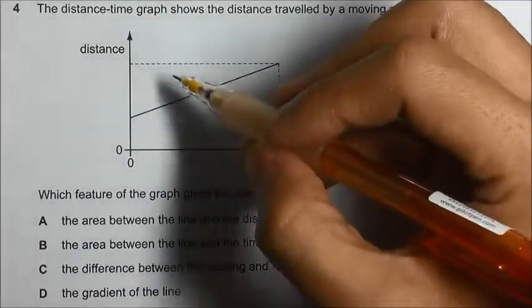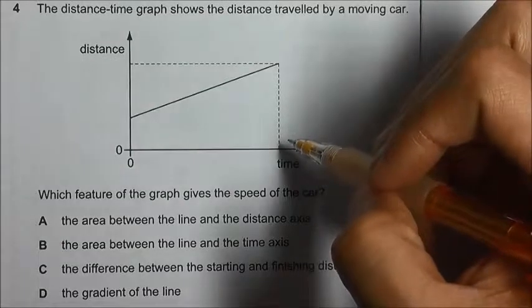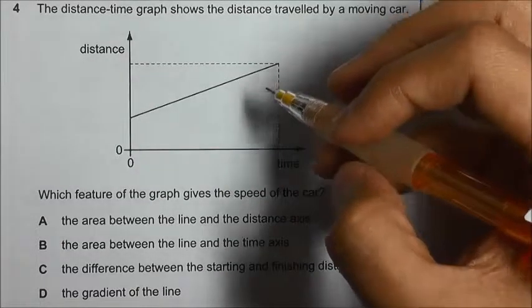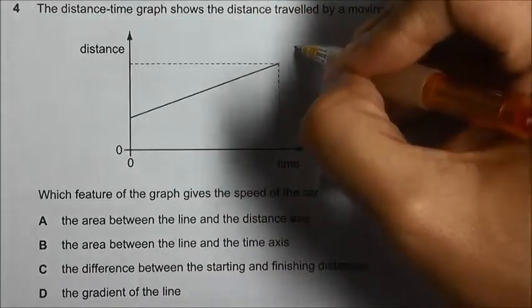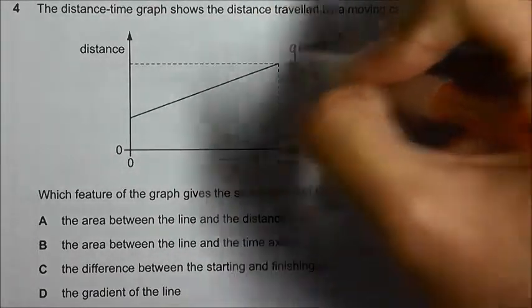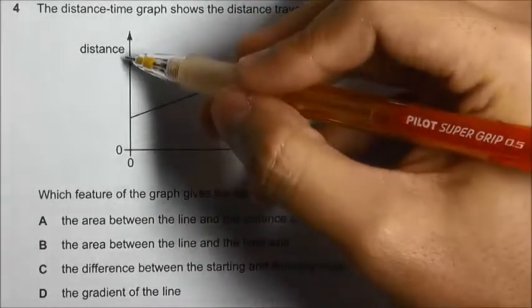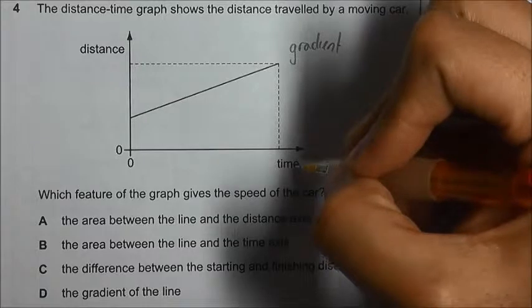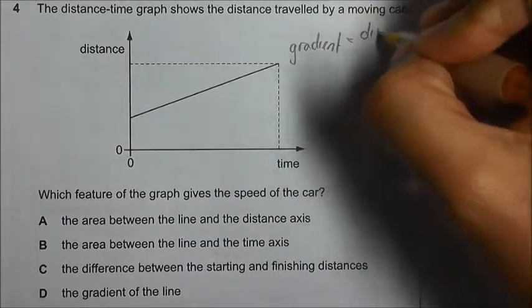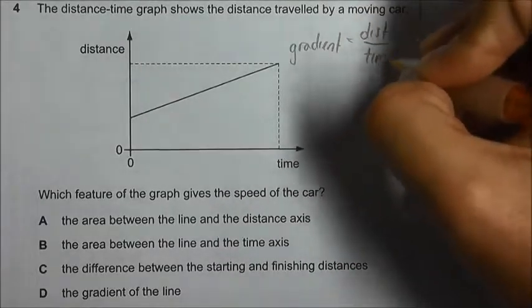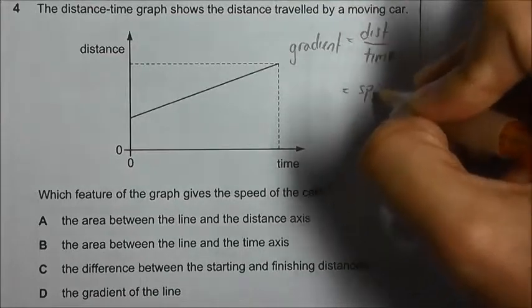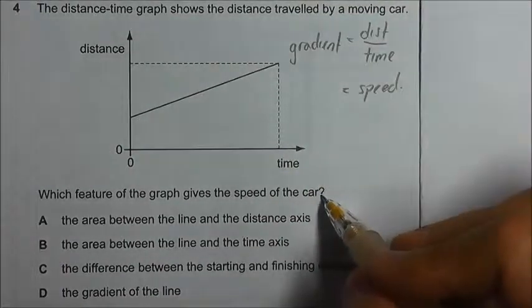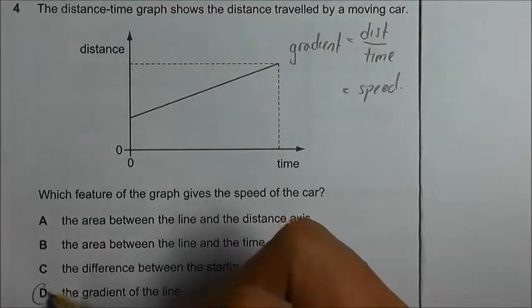For the distance-time graph, the gradient will give us the speed of the car. So how do we prove it? Gradient is equal to the rise over run, and the rise is indicated by distance, and the run is represented by time. So you take distance divided by time - this is actually the formula for speed. So to find the speed of the car, we will look at the gradient of the line.